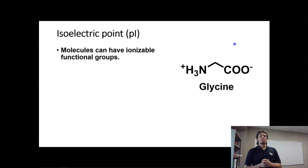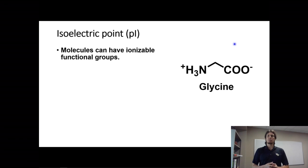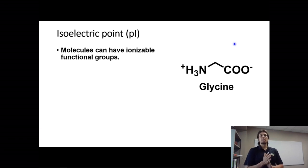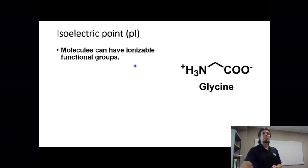The molecule we use as an example is an amino acid called glycine. Glycine is an amino acid that has two ionizable functional groups: an amine group and a carboxylic acid group, as shown.